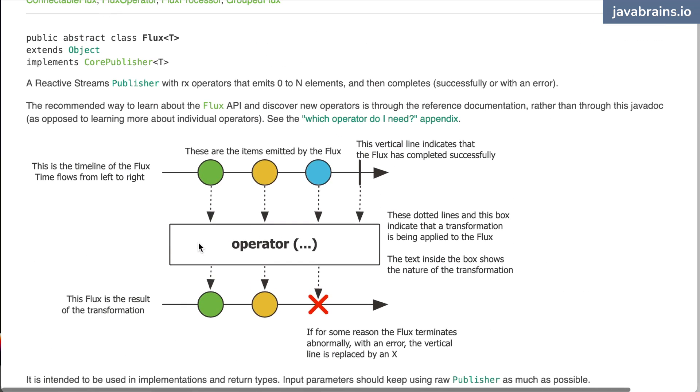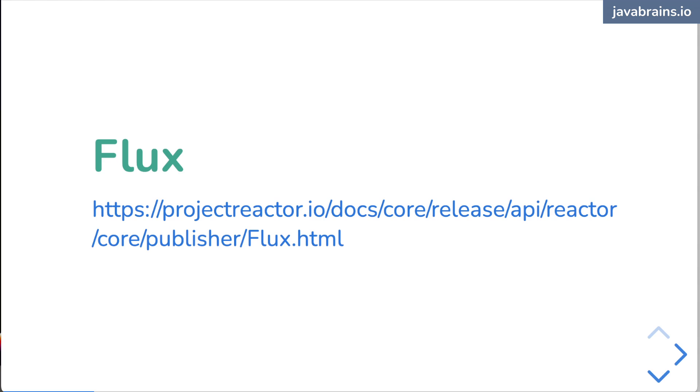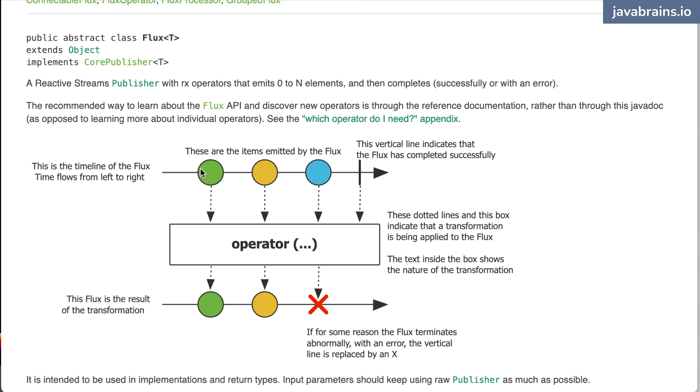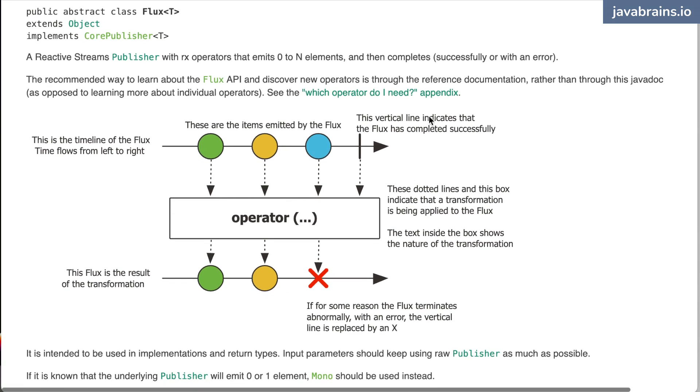So when you look at a Flux or a Mono or even any of these operators, you will see a diagram that looks like this. Okay. This is what's famously referred to as a marble diagram. Okay. There is a thing called the marble diagram. It's not marble diagram. That's a marble diagram. This one. Okay. You usually see this when you're looking at Javadoc operators. Okay. So this is what's referred to as a marble diagram. And this is a representation of how the Flux itself works and how an operator works. Okay. So basically this is the timeline for the Flux. I'm going to explain what the marble diagram, you know, actually means to convey.